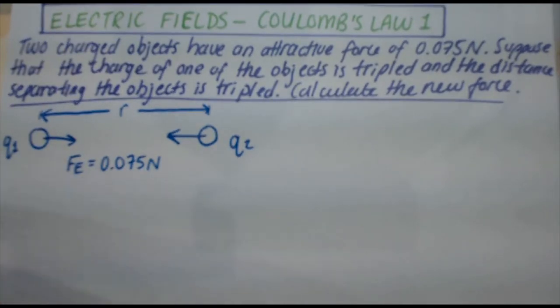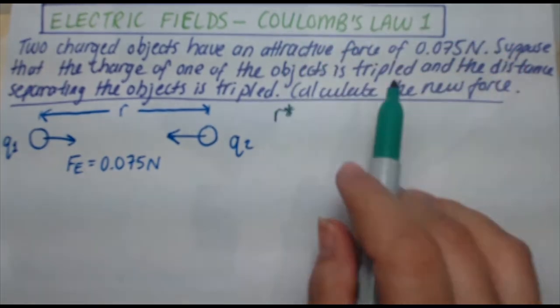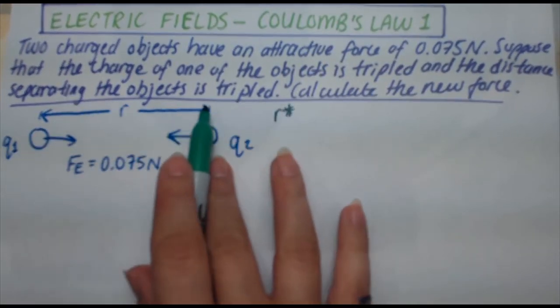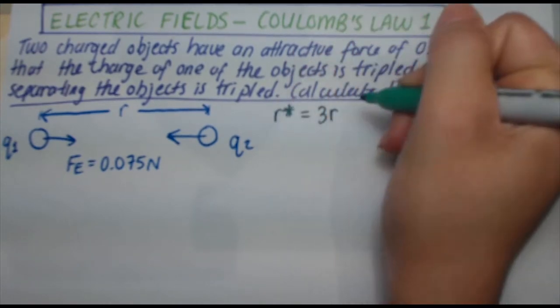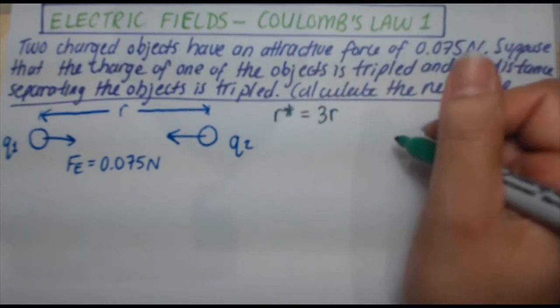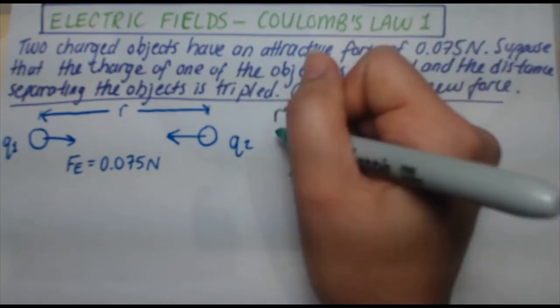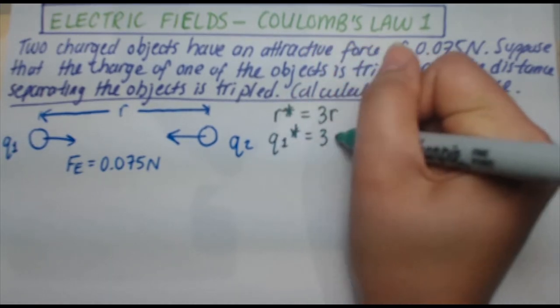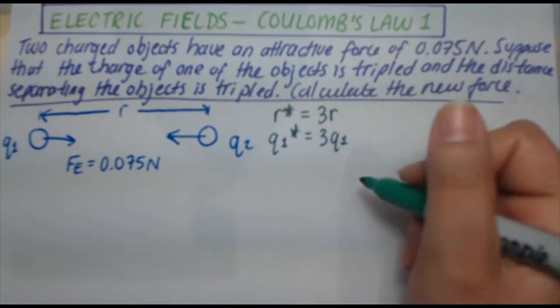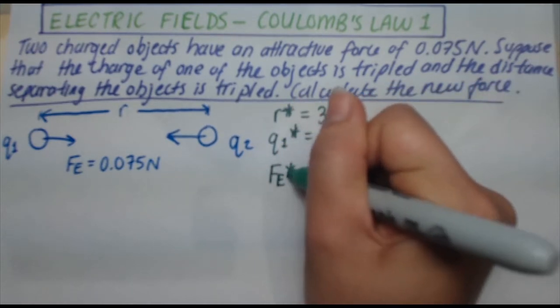For the new ones, I'll call them, for example, the new distance, I'll say R star. The question tells us that the distance is tripled. So the new distance R star is three times the original distance R. It also tells us that the charge of one of the objects is tripled. So Q1 star equals 3Q1. My task is to find the new force, so I'm looking for Fe star.